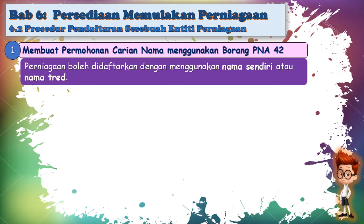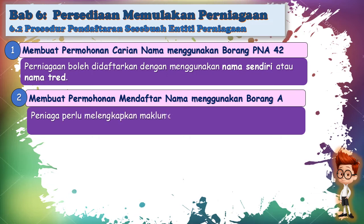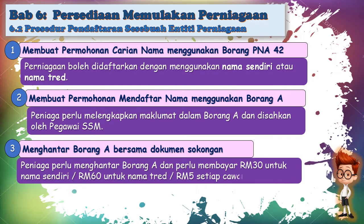Prosedur pendaftaran perniagaan milikan tunggal: Yang pertama, membuat permohonan carian nama menggunakan borang PNA42. Perniagaan boleh didaftarkan dengan menggunakan nama sendiri ataupun nama trade. Yang kedua, membuat permohonan mendaftar nama menggunakan borang E, di mana perniagaan perlu melengkapkan semua maklumat dalam borang E dan disahkan oleh pegawai SSM. Yang ketiga, menghantar borang E bersama dokumen sokongan dan membayar RM30 untuk nama sendiri, RM60 untuk nama trade, dan RM5 bagi setiap cawangan.